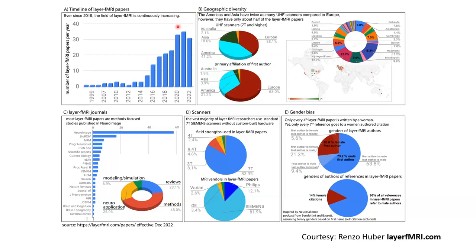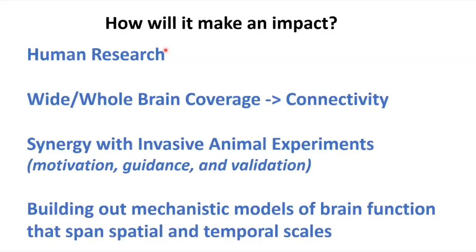I'm a little concerned that 7 Tesla — unlike 3 Tesla, which became widely available because of clinical utility — is still like a Formula One racing car: not a publicly consumable product yet, with only about 120 in the world. Siemens may eventually question its sustainability, so one of our goals should be to make 7 Tesla clinically applicable so it catches on as a product.